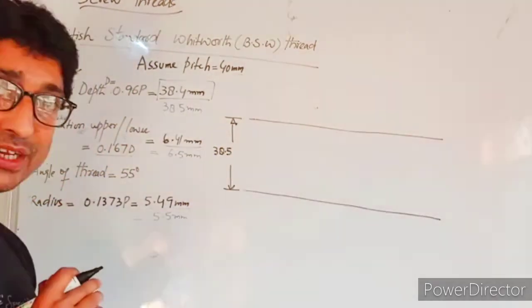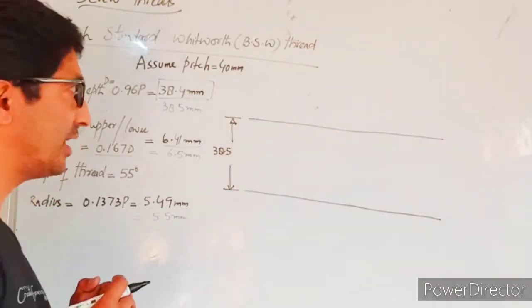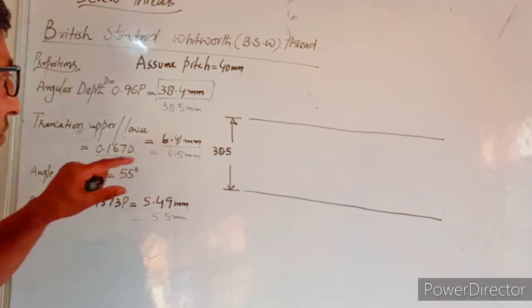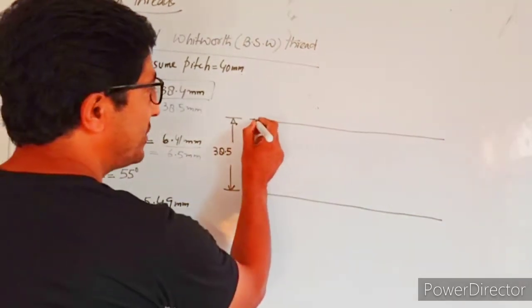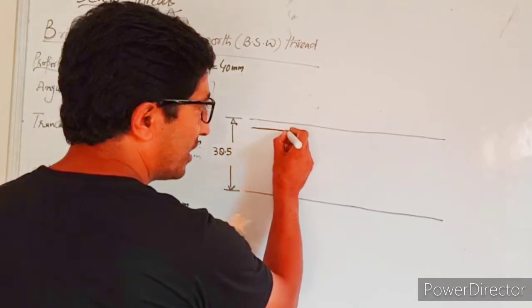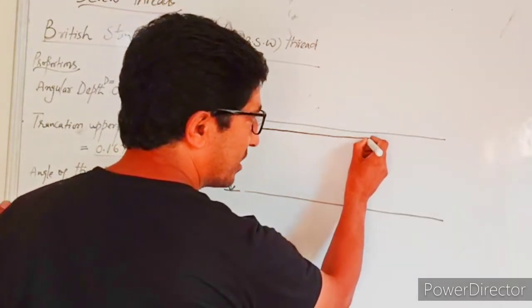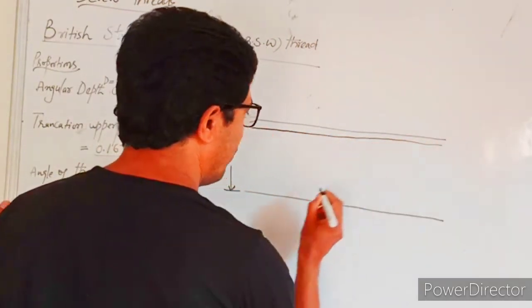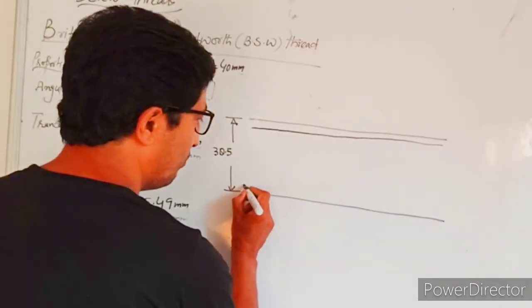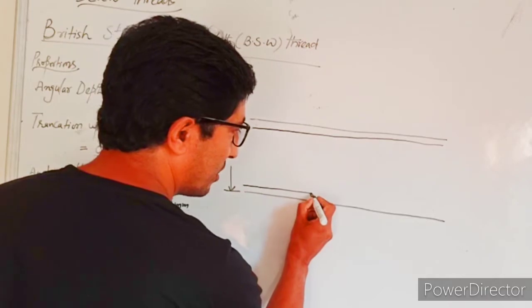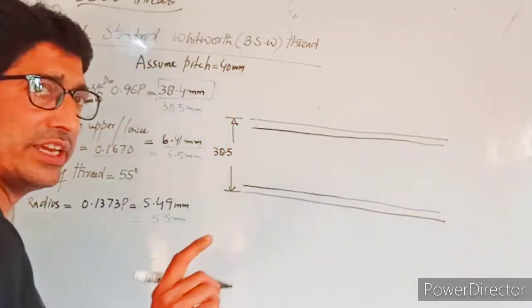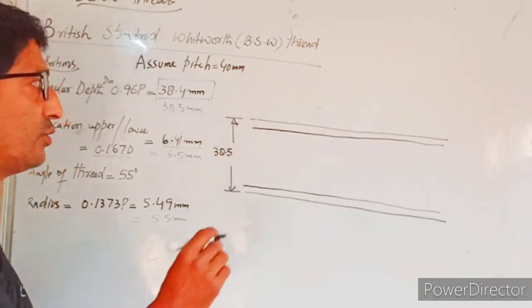Then we have upper truncation and lower truncation. The truncation is the same, upper and lower, that is 6.5mm. So from the upper line, we draw another line 6.5mm below. Again, a light line. This is the same measure, we draw a line here.